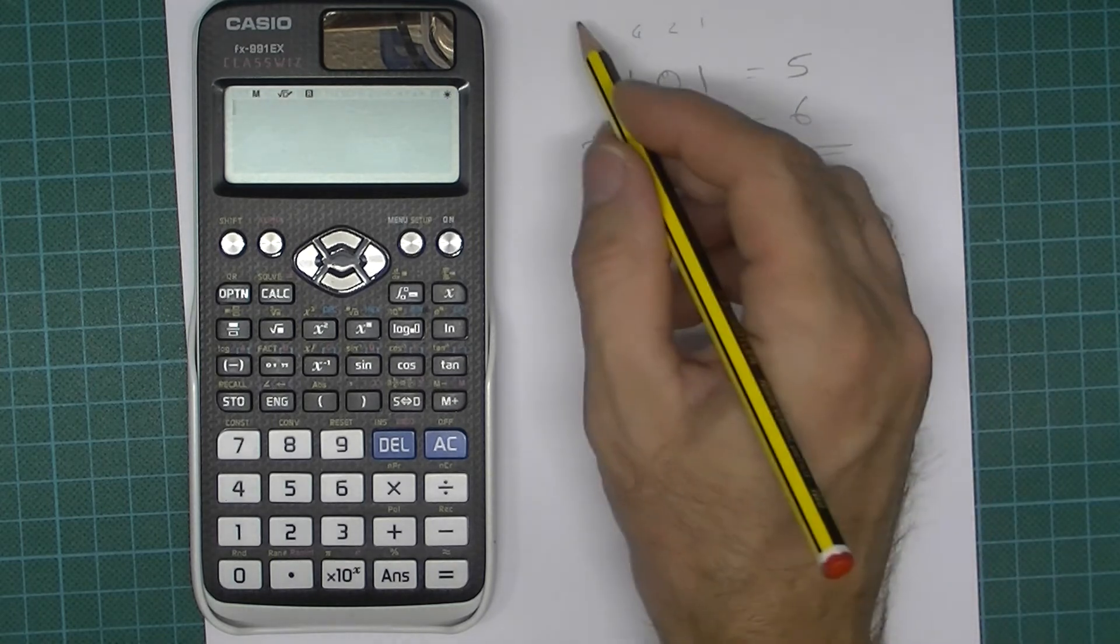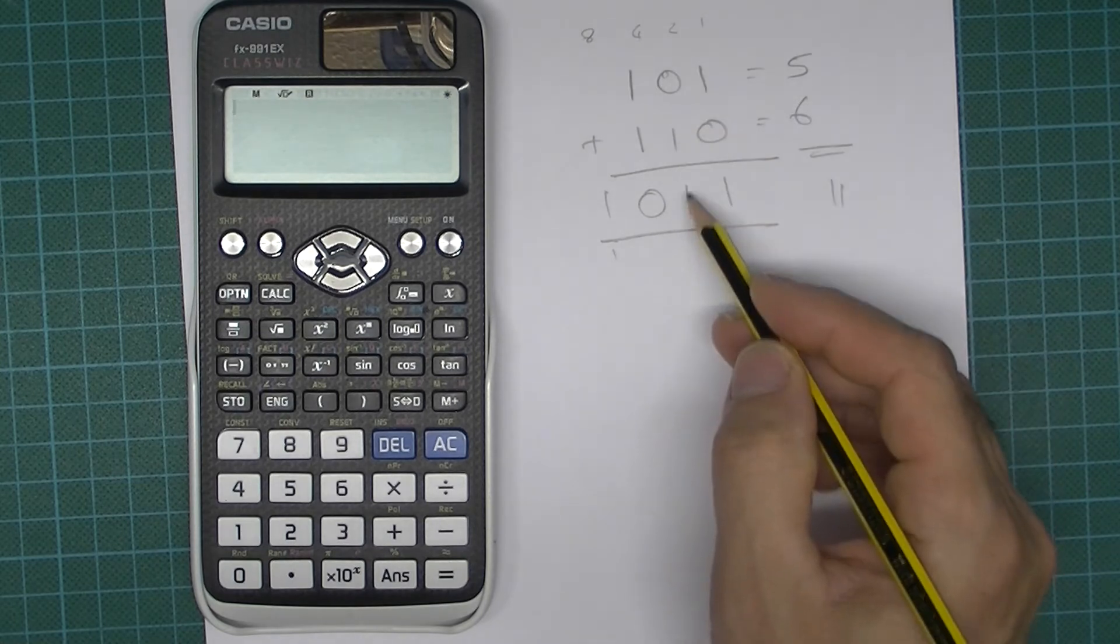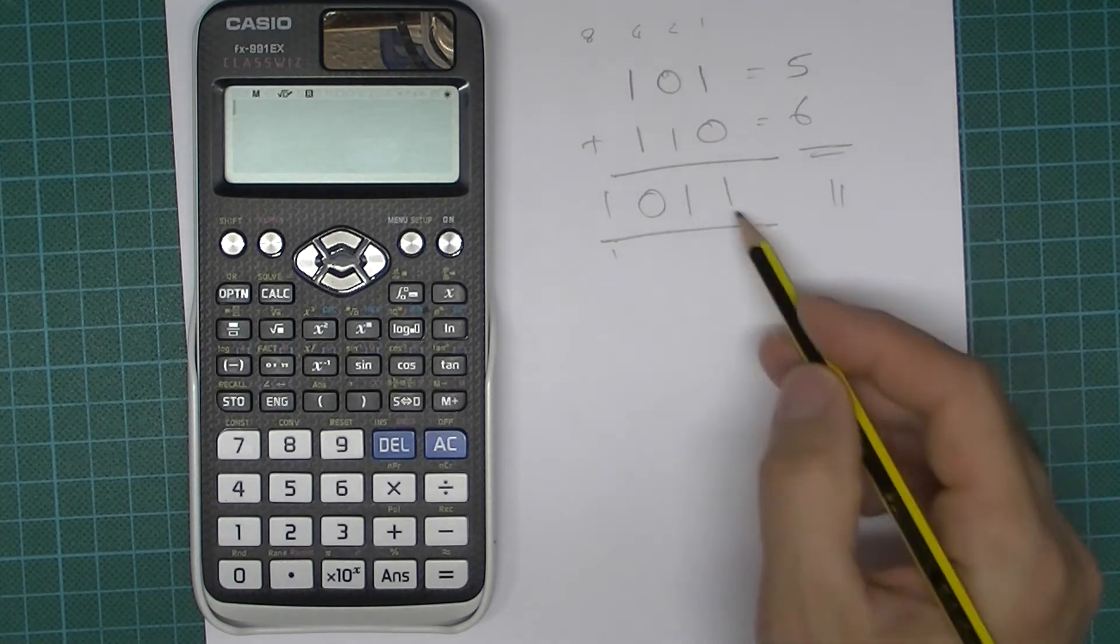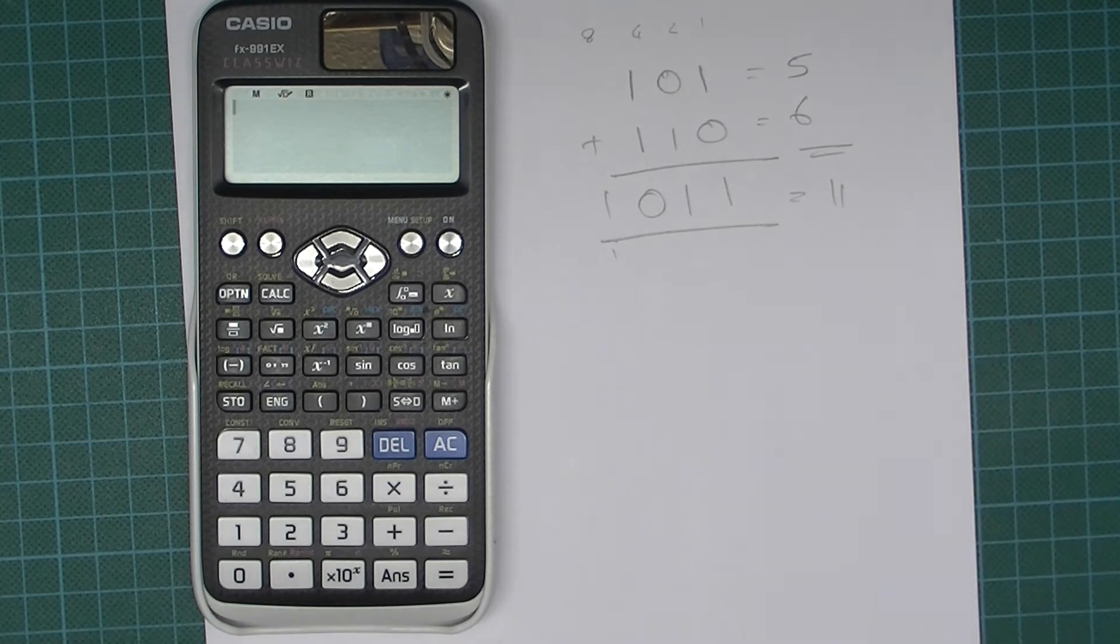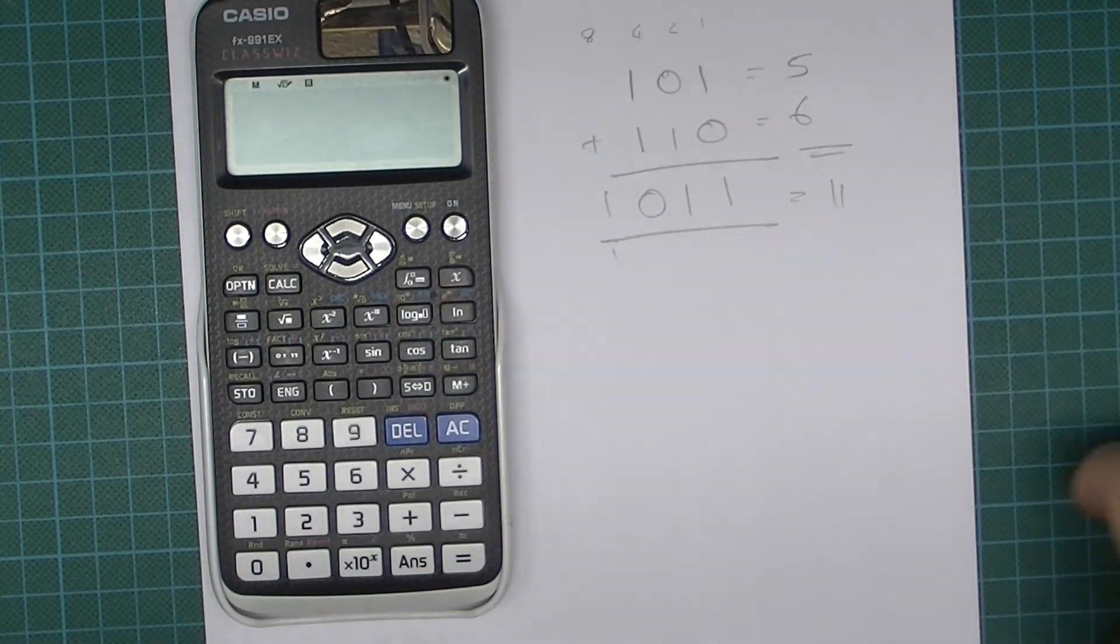Which of course is going to give us 11, and here we've got 1 lot of 8, 1, 2, so we've got 8 plus 2 plus 1 which is 11. OK, so yeah that's right.